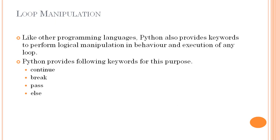The pass statement is used when a statement is syntactically or logically required but we don't want to execute any code for it — we just want control to pass to the next line. At that time we can use the pass statement. The else statement is generally used after the loop block. When execution of the loop finishes, the instructions written in the else block will get executed. These are the loop manipulation statements, and now we will see how these are used in our Python program.